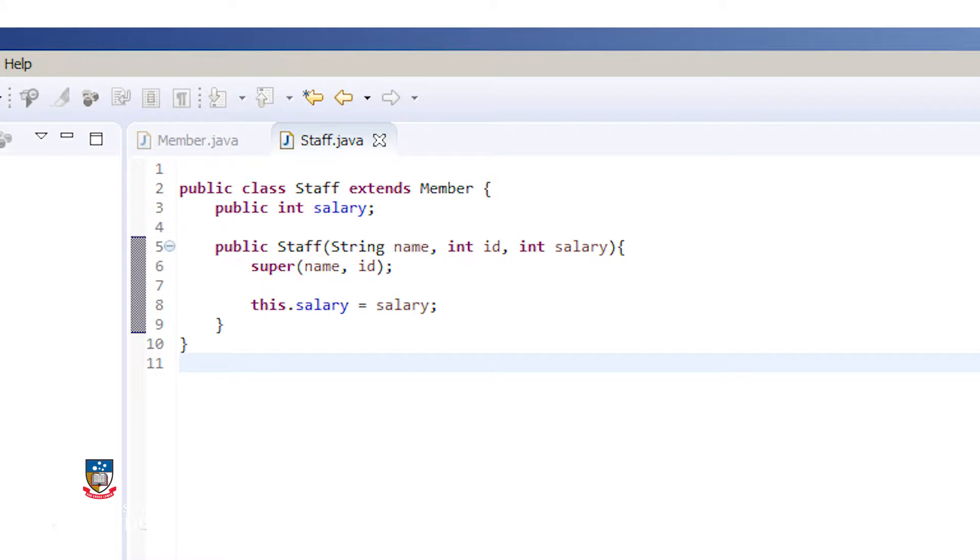In order for this inheritance to work, I need to define how staff relates to the member class. I do this in the constructor. In the staff constructor, I call the member constructor like so. In this way, I have called the member constructor by using the super keyword in the staff's constructor. I will also need to initialize the staff specific variable salary.